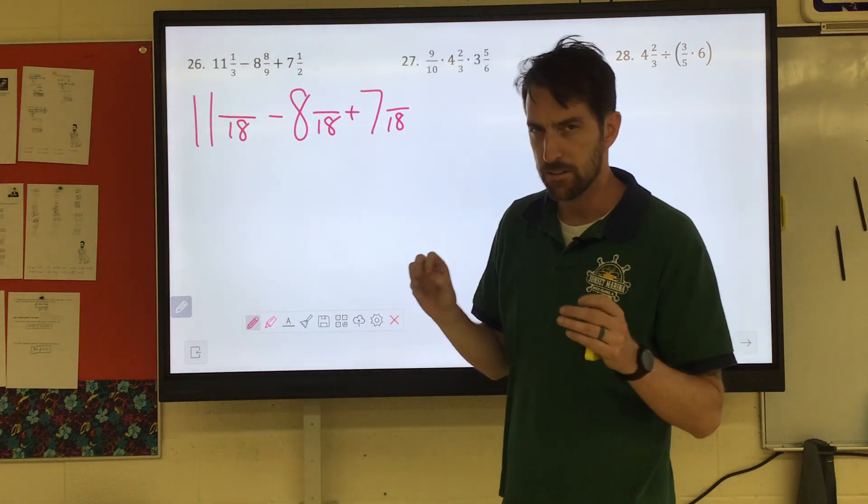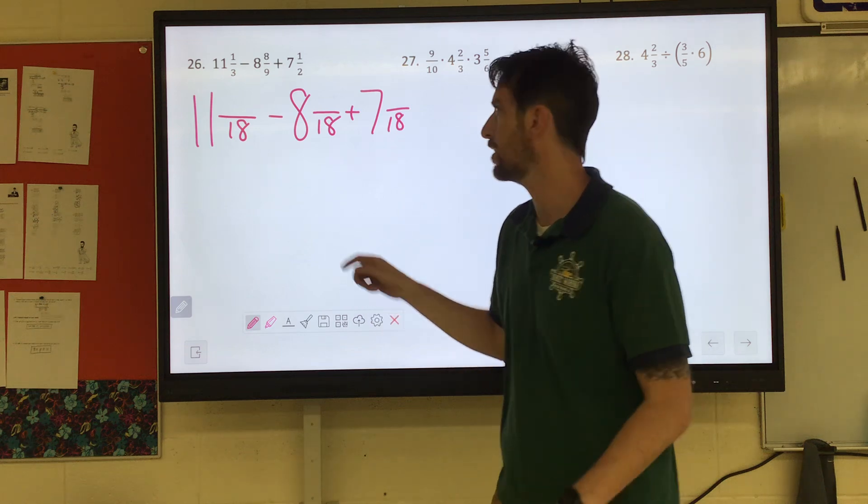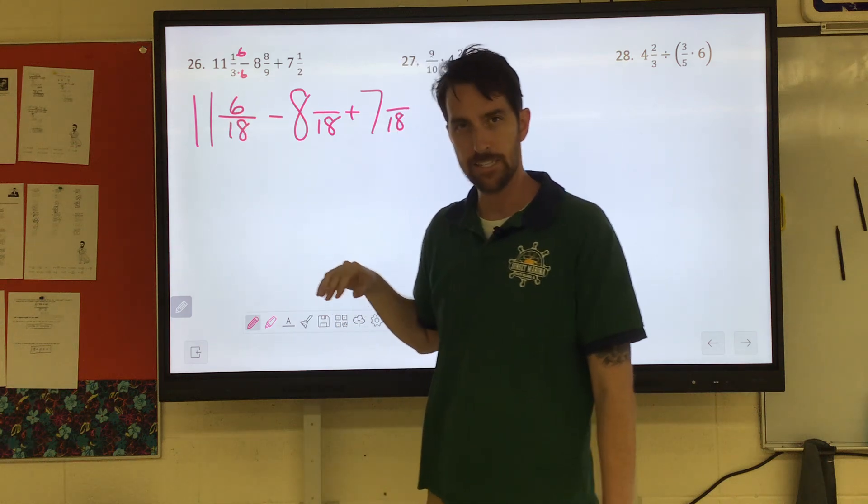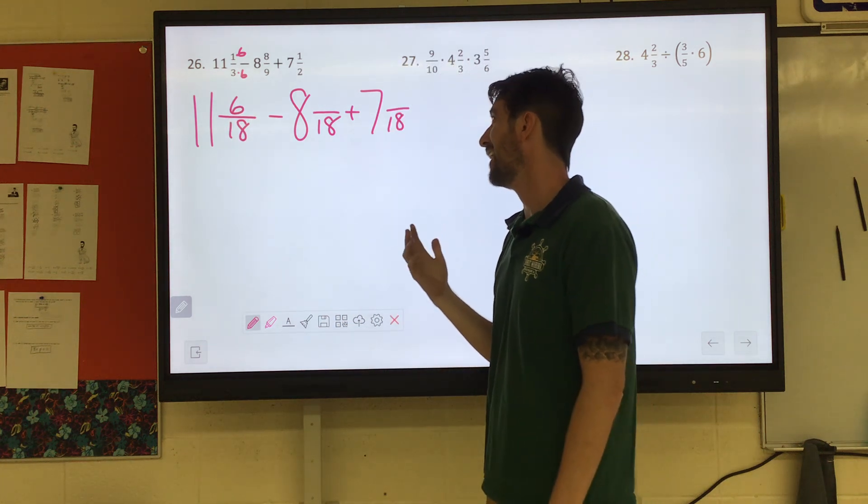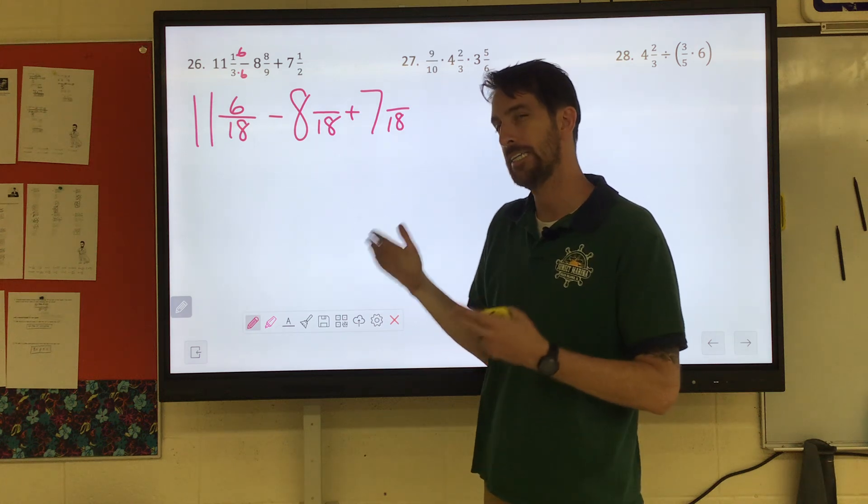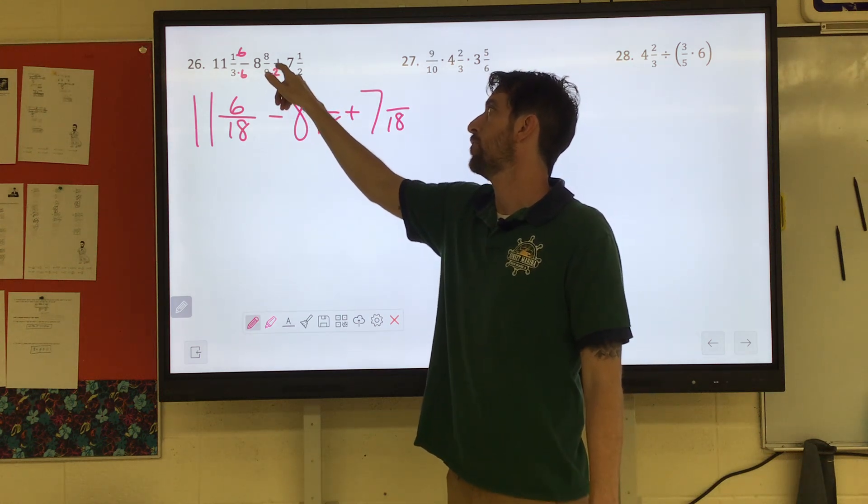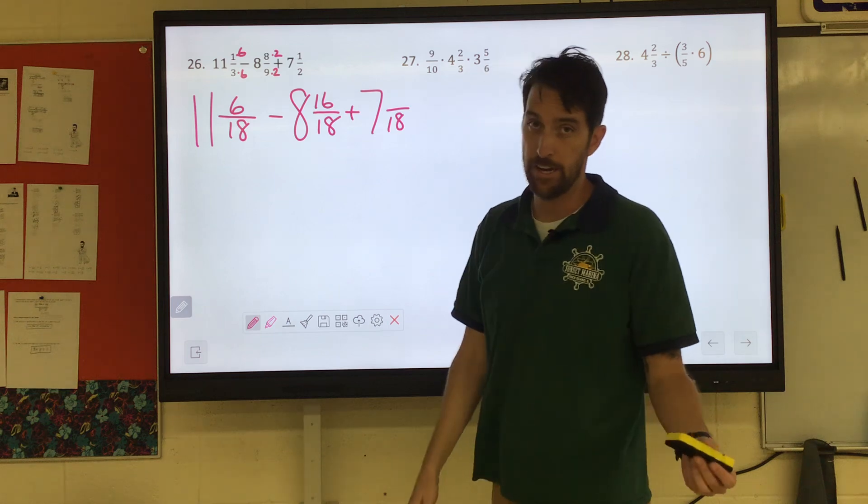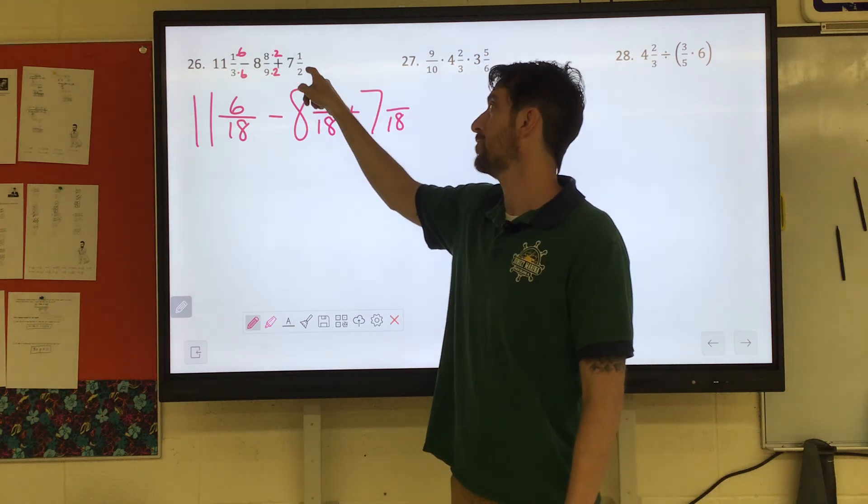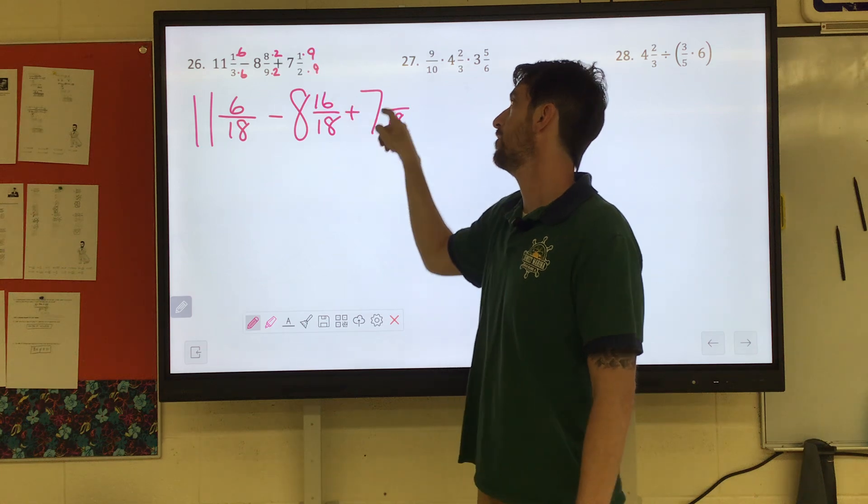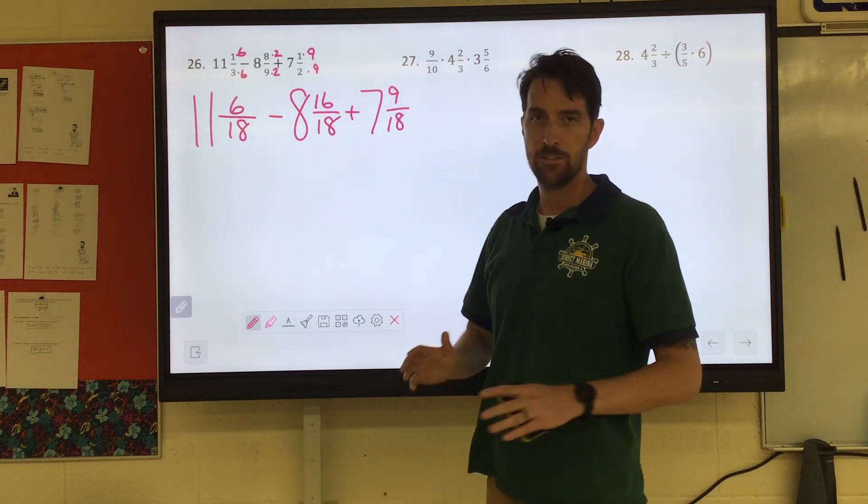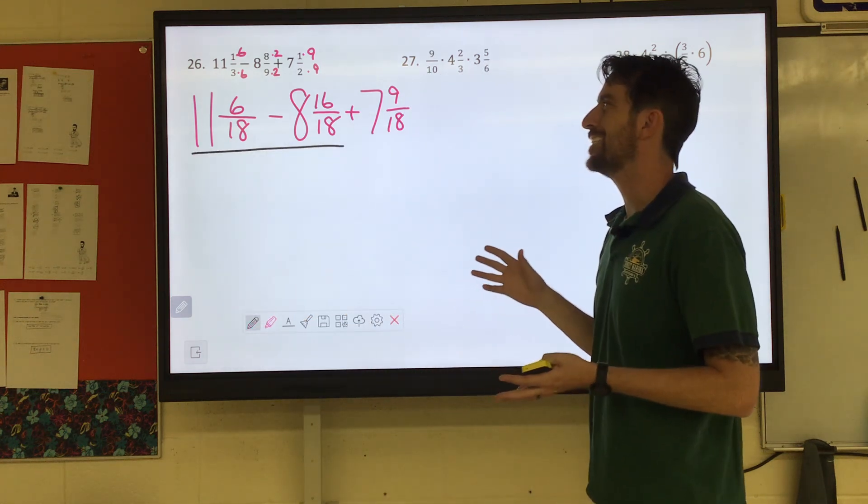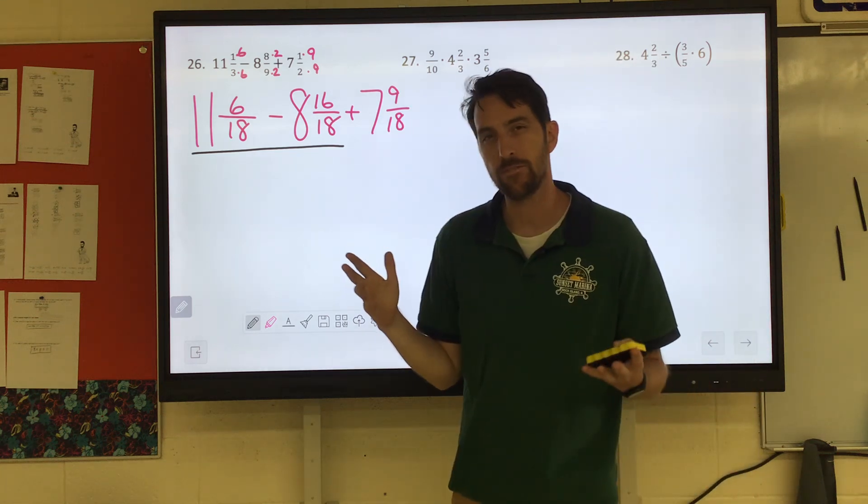So we look at the first fraction. One third. Three times what would give us 18? It's times six. So we'd have to multiply the numerator by six as well, which would give us 11 and six eighteenths. We look at the next one, eight and eight ninths. Okay, well, nine times two is 18. So if we multiply the numerator by two, that would be 16 eighteenths. And the last one, seven and a half. Two times nine gives us 18. So one times nine would give us nine eighteenths. Now, addition and subtraction, you always go left to right. So we're doing 11 and six eighteenths minus eight and 16 eighteenths.